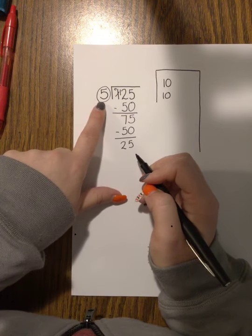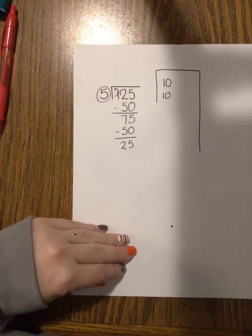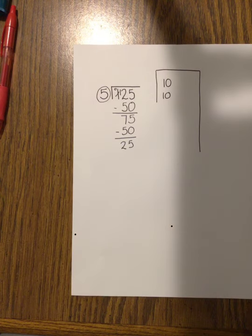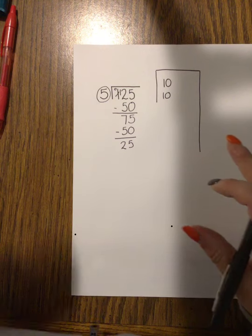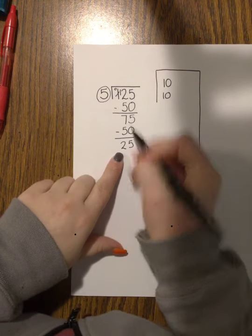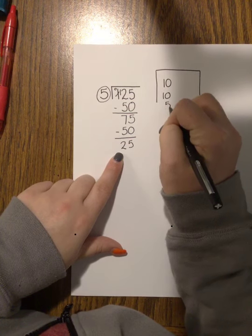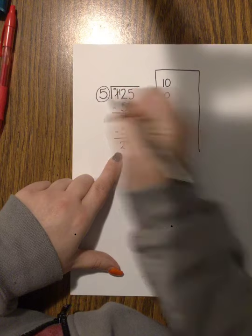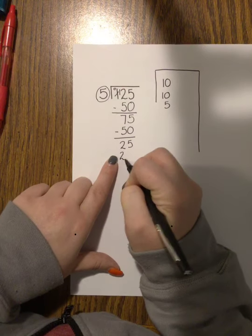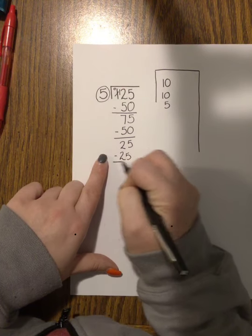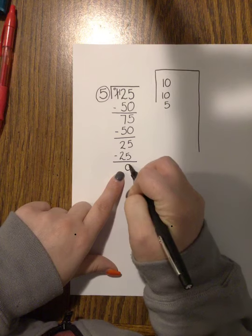That's when we can start to take out the next smallest. We want to go from tens. Now I know that I can take out 5 groups of 5 because 5 times 5 is 25. I'm going to subtract 25, and now I have none left over.